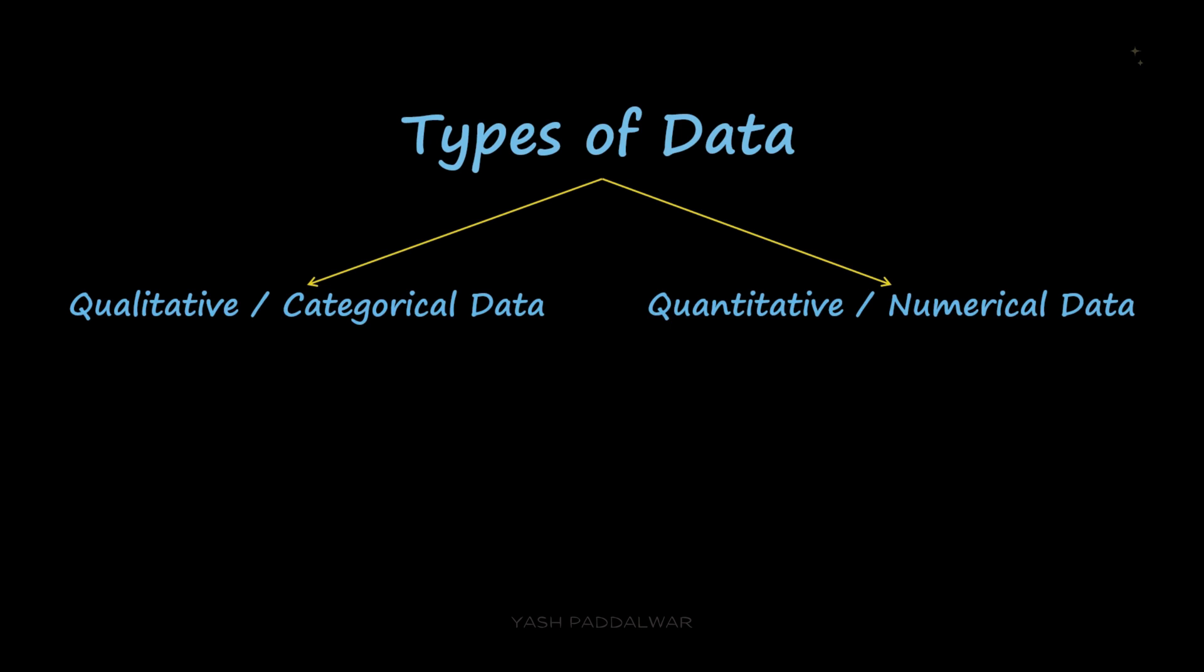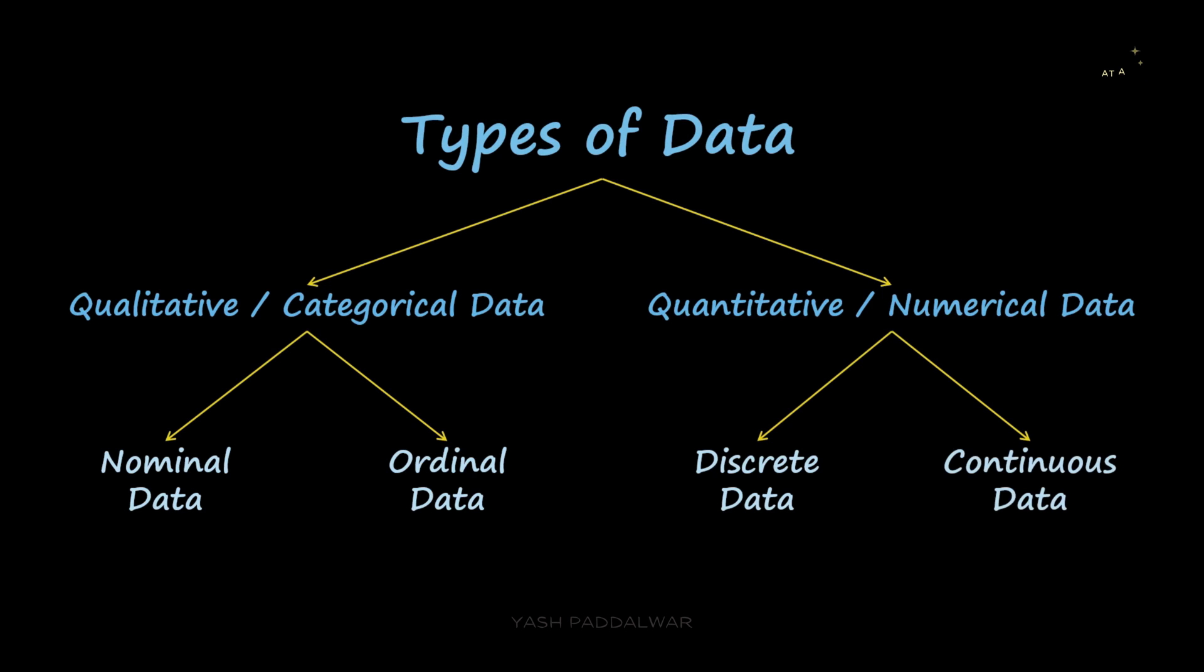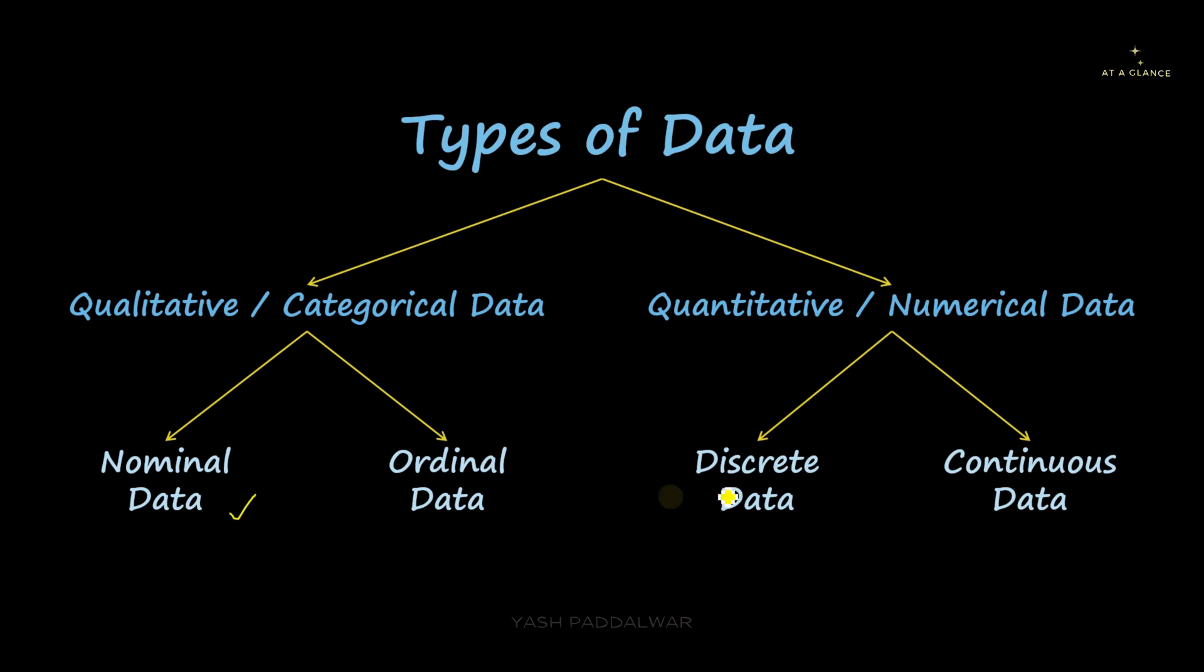When we come to qualitative data, it is broadly classified into two types: nominal data and ordinal data. Quantitative data is also classified into two types: discrete data and continuous data. Now we are going to look into all of this one by one, starting with nominal data, which comes under qualitative or categorical data.